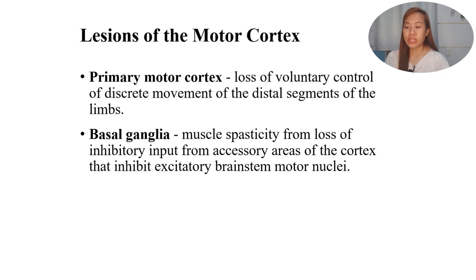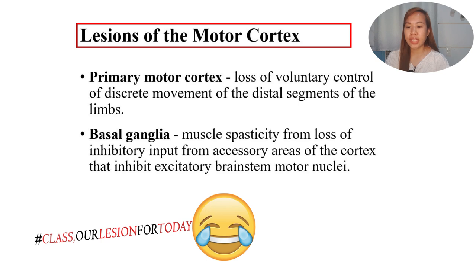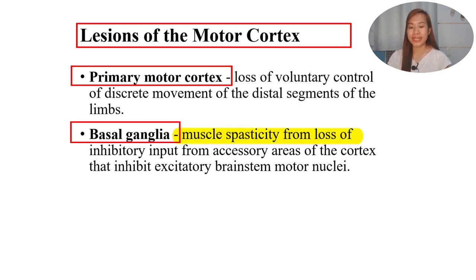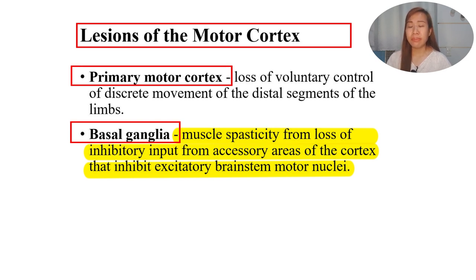To end this lecture, we'll discuss possible lesions of the motor cortex and their effects. If there is a lesion in the primary motor cortex, it will cause loss of voluntary control of discrete movement of the distal segments of the limbs - you will no longer be able to precisely control these voluntary movements. If there is a lesion in the basal ganglia, there will be muscle spasticity from loss of inhibitory input from the accessory areas of the cortex that inhibit excitatory brainstem motor nuclei. It will cause spasticity - there will still be movement, but it will not be fine-tuned or very detailed.